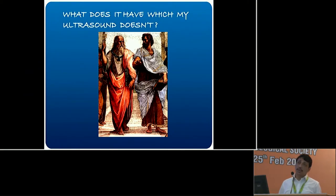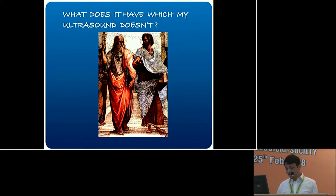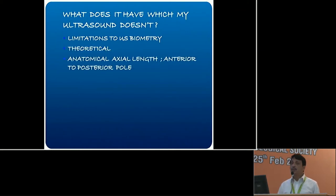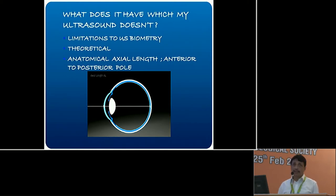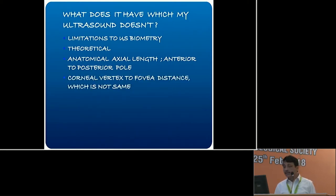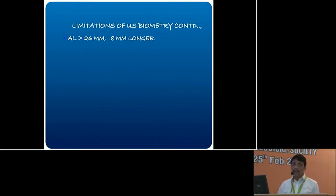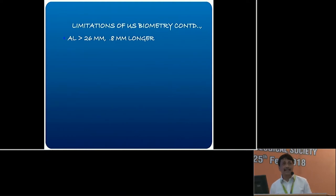What does optical biometry have that ultrasound doesn't? There are three basic theoretical problems with ultrasound. First, ultrasound measures the anatomical axial length from the anterior pole to the posterior pole, but optical biometry measures the corneal vertex to foveal distance — which is not the same thing. The fovea is temporal and not centered, and in eyes more than 26 mm, this can make a difference of 0.8 mm — about 2.5 diopters off target, which is the difference between 6/6 and 6/60.